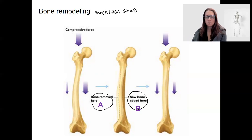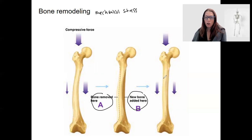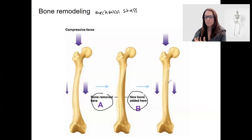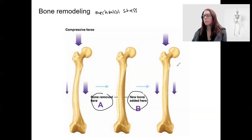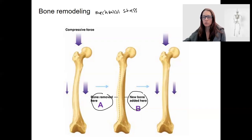A force — and it's actually the physical force stimulating osteoblasts — results in an alteration, a remodeling, producing a different physical structure based on the force received. Another example of remodeling is astronauts losing bone density in space for extended periods of time, while weight-bearing exercises increase bone density overall and can also lead to remodeling.